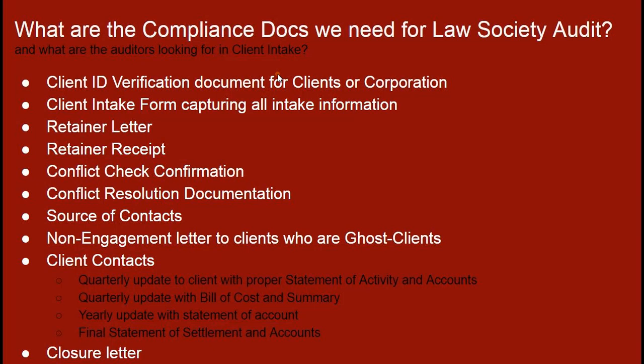Assuming you've done the conflict check and there are no conflicts, the next chronological document is a retainer or engagement letter, followed by a retainer or payment receipt for that initial amount. The source of contact document is more specific to your firm across all clients — so for the month of October, a source of contact report would tell you that thirty percent came from family referral, for example, covering all clients that your firm had that month for the entire legal firm.